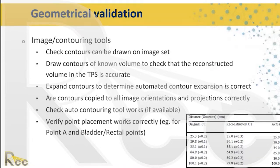We verify that the projection of a contour on a specific image orientation makes sense in all other orientations — for example, a contour in the axial slice should appear correctly in the coronal and sagittal views with the right shape and volume. Any auto-contouring tools available should also be verified. It is also important to verify point placement — for GYN brachytherapy, correctly localizing point A, point B, and rectal and bladder points.